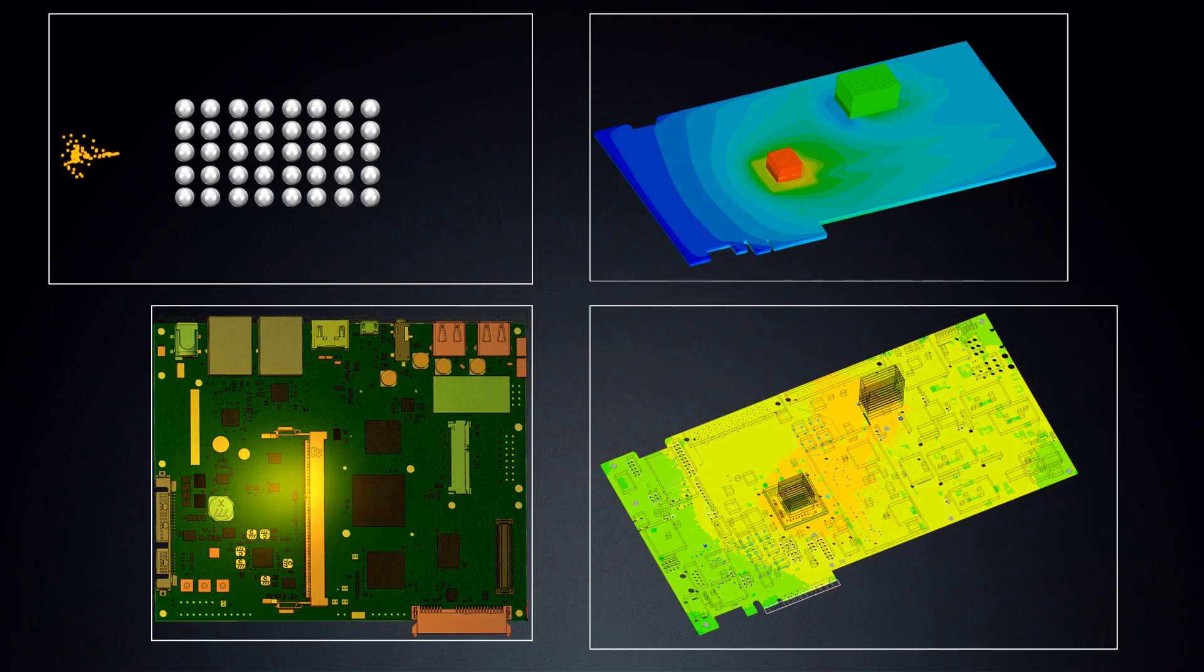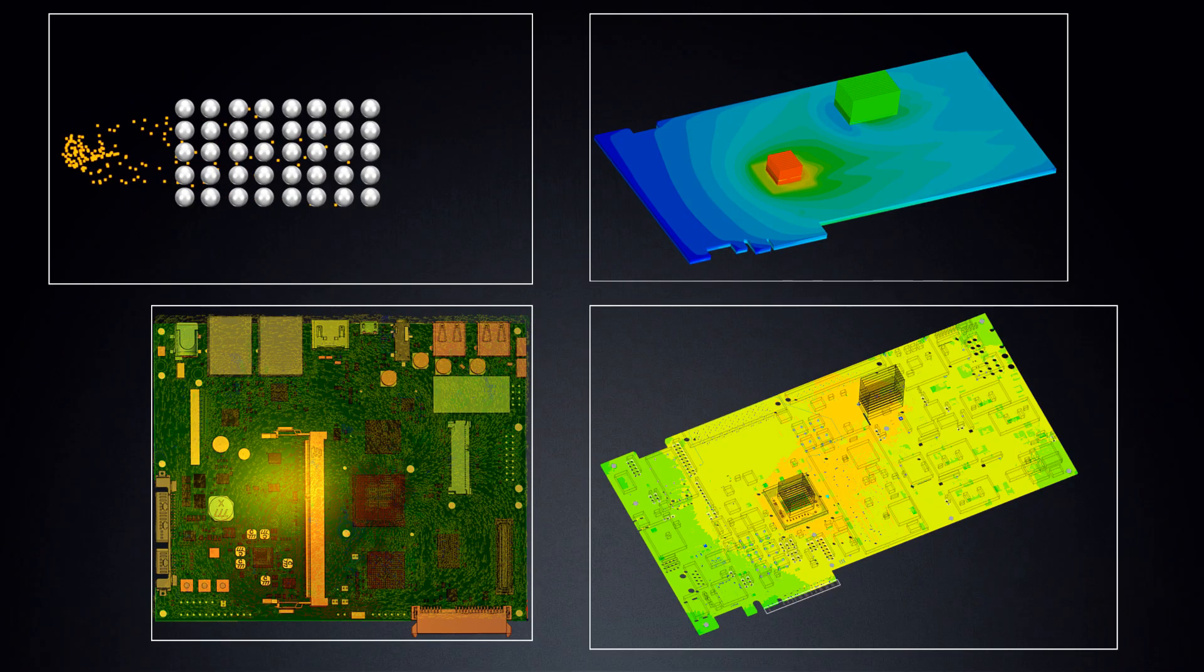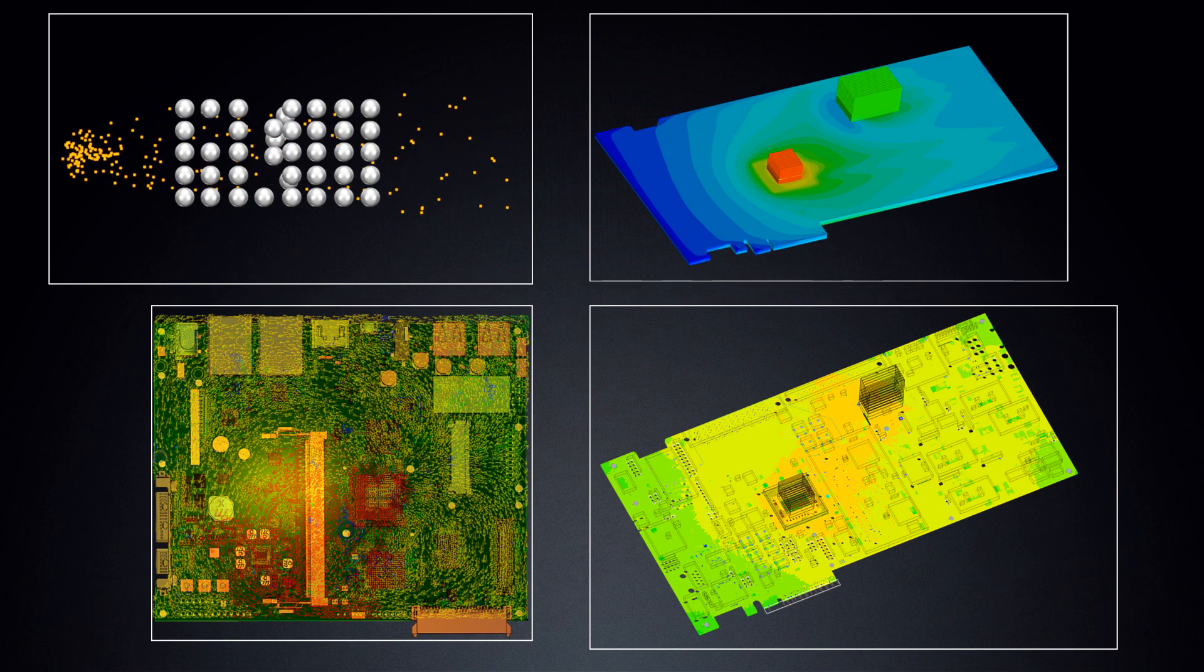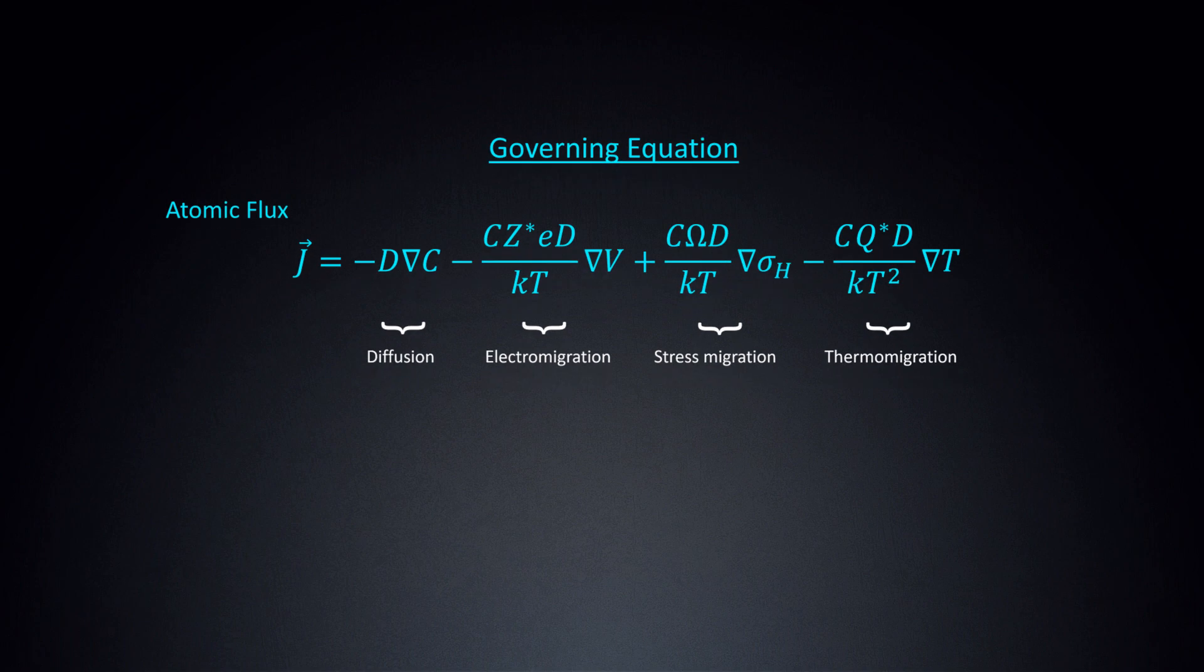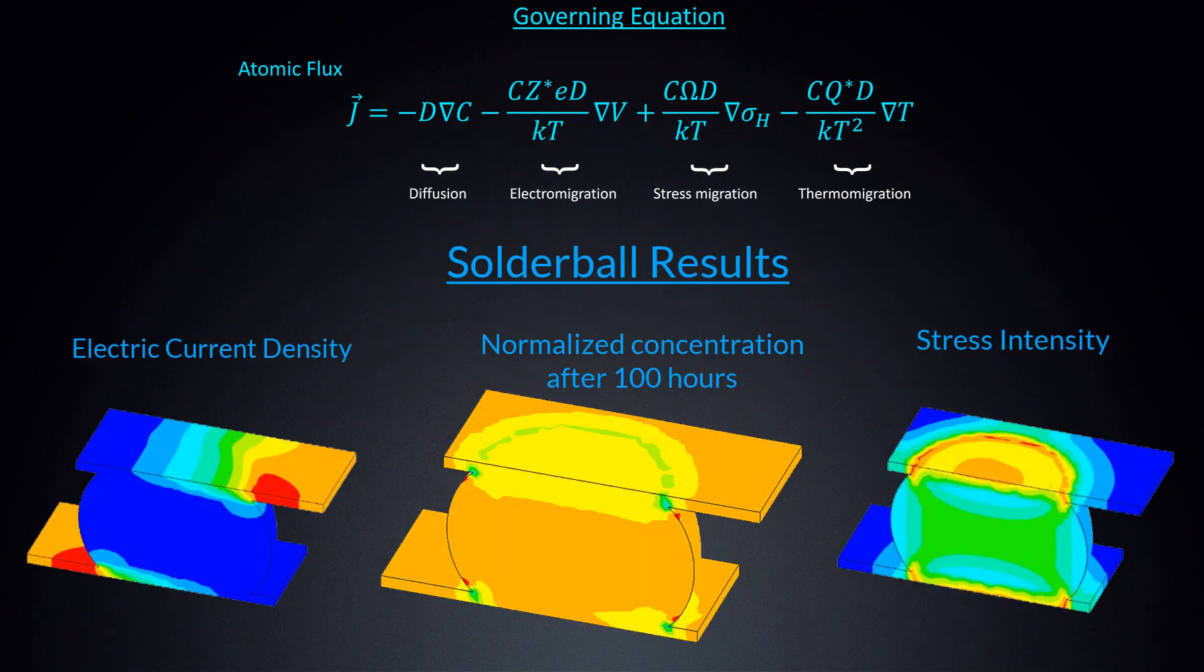Simulate PCBs in ANSYS SI-WAVE to easily identify and resolve potential electromigration issues and boost electronics reliability. To go even deeper into the detailed physics of electromigration at the individual component level, consider ANSYS Mechanical.